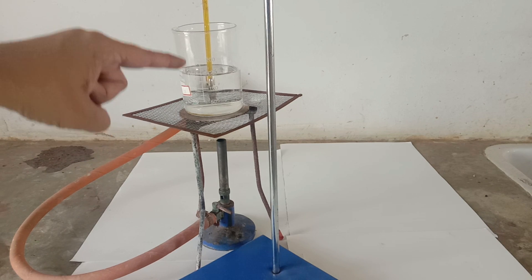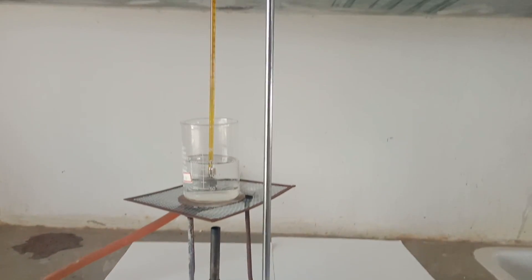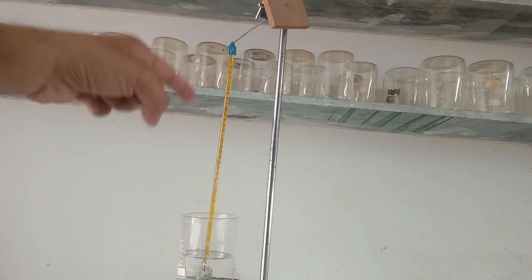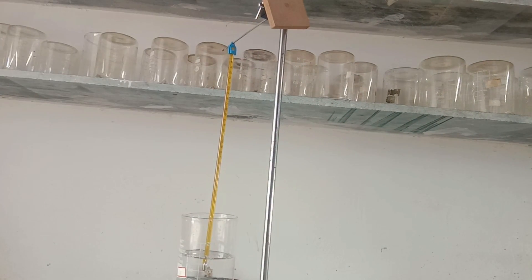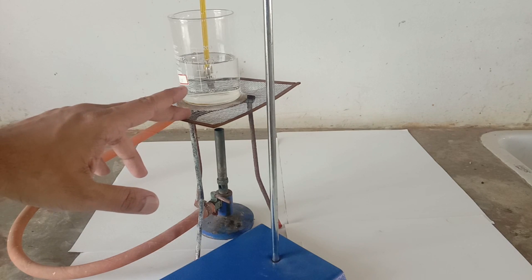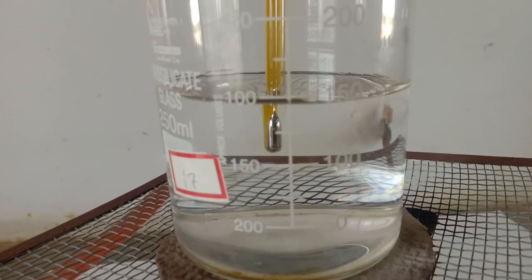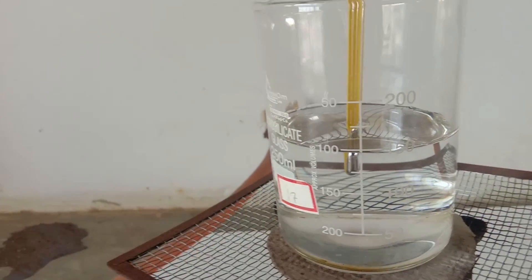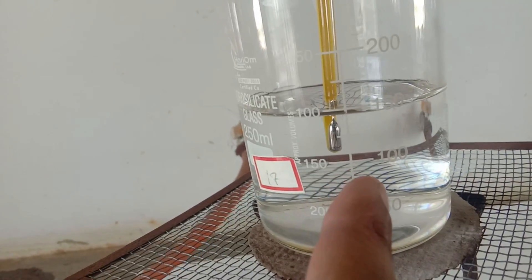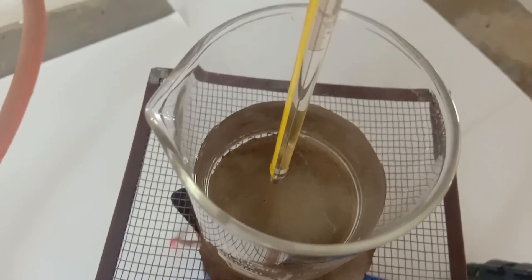Here I have taken some amount of water in a beaker, somewhere around 150 ml. With the help of a stand I have suspended this thermometer. Here we have the Bunsen burner, a wire gauge, and water in a beaker which we are going to heat. Wire gauge is used for uniform heating. You may have a look at the quantity of water - it is approximately 150 ml because the reading is somewhere in between 100 and 200.